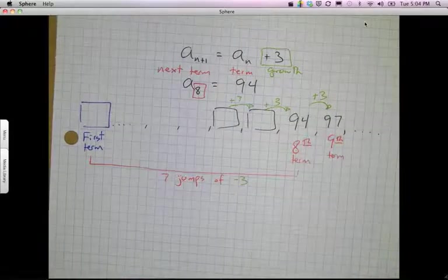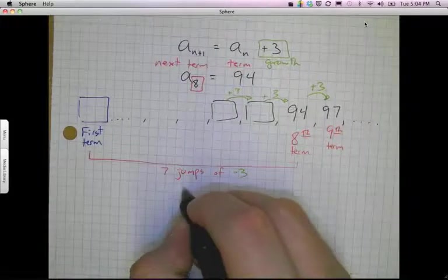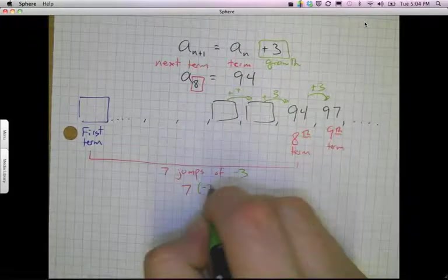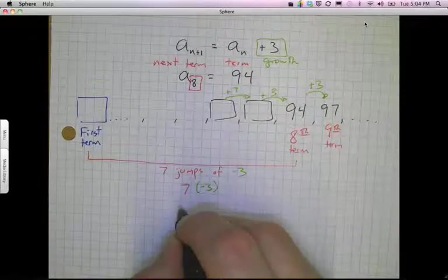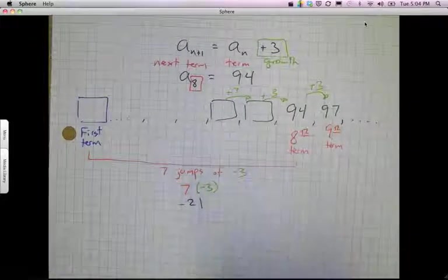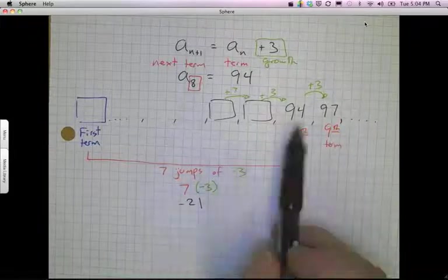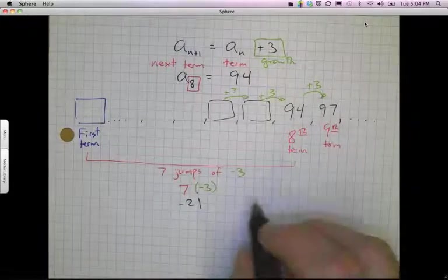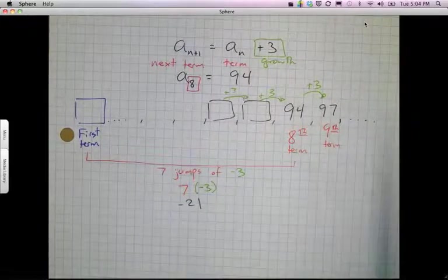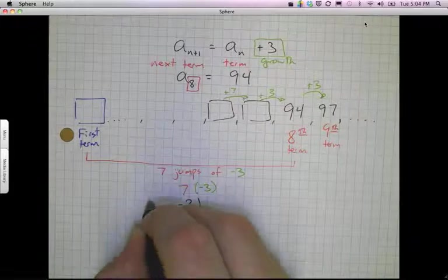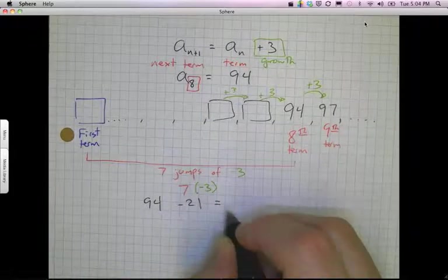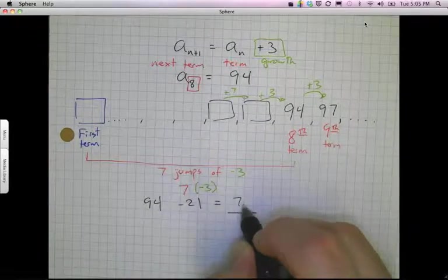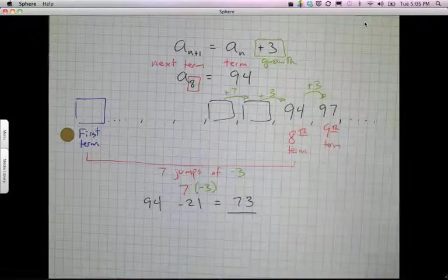Well, 7 jumps of minus 3 is just going to be 7 times minus 3, which is basically negative 21. And that's how far backwards I went. So my first term is 21 numbers lower than 94. So if I take the 8th term that I've got, 94, and I subtract 21, that should end up giving me my first term. In this case, it's going to be 73. And that's my first term.